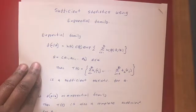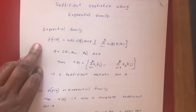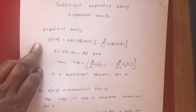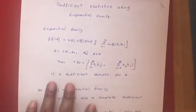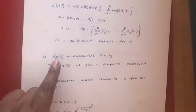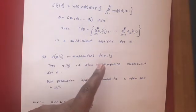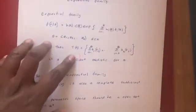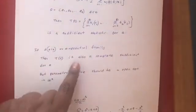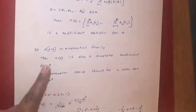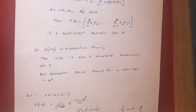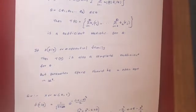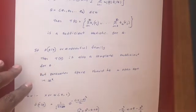You can generalize this method and say that if your PDF belongs to an exponential family, then T(x) will also be a complete sufficient statistic. That means if f(x|θ) belongs to an exponential family, this statistic is also a complete sufficient statistic. The one main restriction is that the parameter space of θ should be an open set in ℝ, or if it is k-dimensional, it should be an open set in ℝ^k.